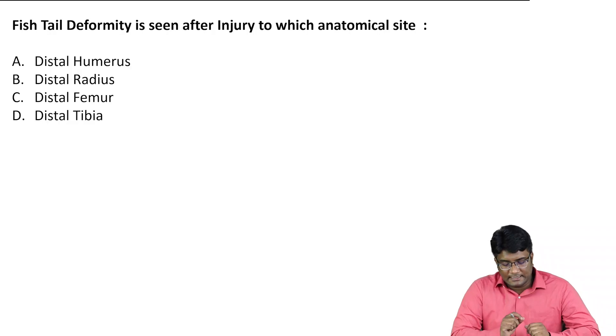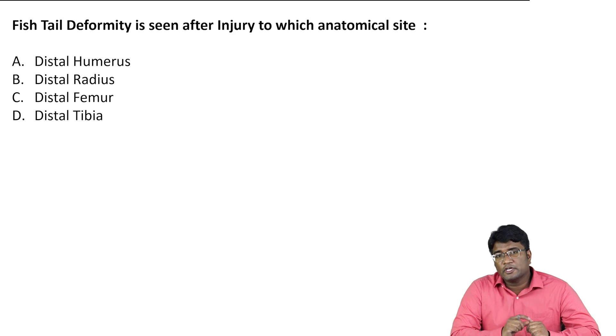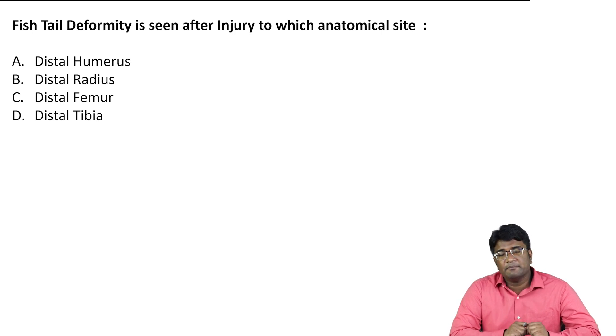The next question: fish tail deformity is seen after injury to which anatomical site? Is it distal humerus, distal radius, distal femur, or distal tibia?